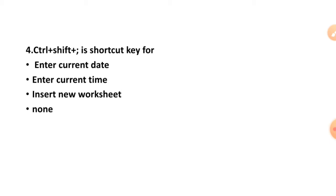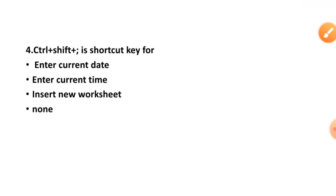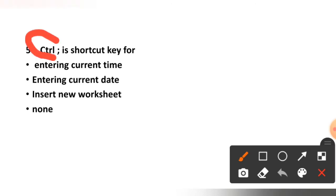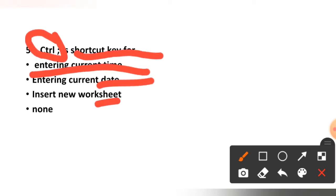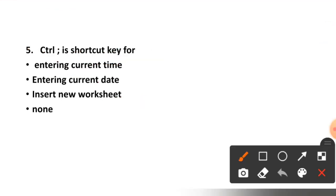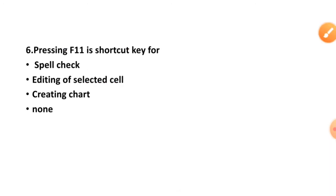Question number four: Control plus Shift plus semicolon is a shortcut key for what? Enter current date, enter current time, insert new worksheet, or none? The correct option is option number two, enter current time. Question number five: Control plus semicolon is a shortcut key for which of the following? The correct option is option number two, date.